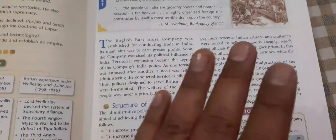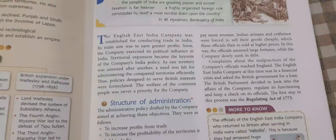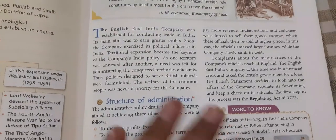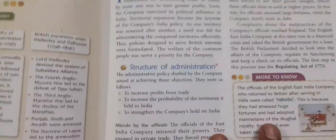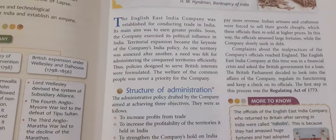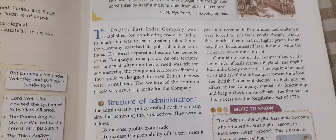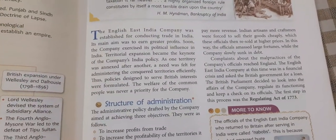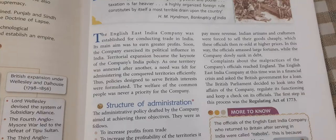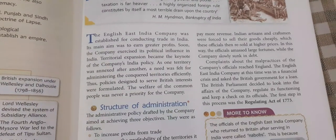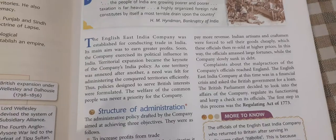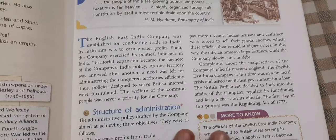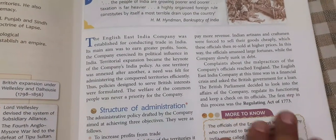Let us come to the Regulating Act of 1773. Why did it come to be passed? Because there was misrule — the British were not ruling India properly and there was a lot of looting going on. The word 'loot' was added to the British dictionary around this time. To control the malpractices of the British East India Company, the Regulating Act was passed by the British Parliament in 1773.